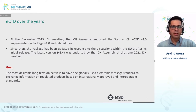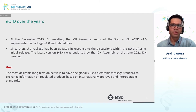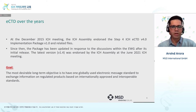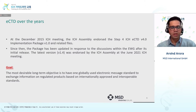The most recent advancement was the release of version 1.4 at the June 2021 ICH meeting, which defines the submission package now available for implementation. Everything happening at ICH has one long-term objective: one global standard — an electronic message that can be used to exchange information on regulated products based on internationally approved and interoperable standards — one standard that can be used electronically across the globe, consistent with ICH's goal to harmonize.